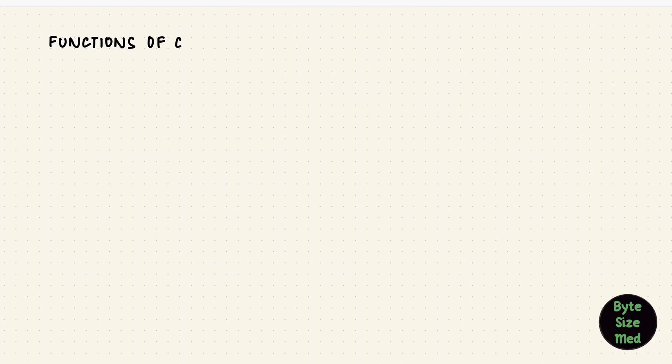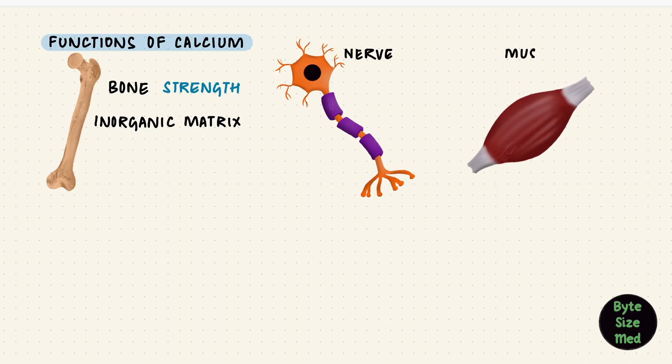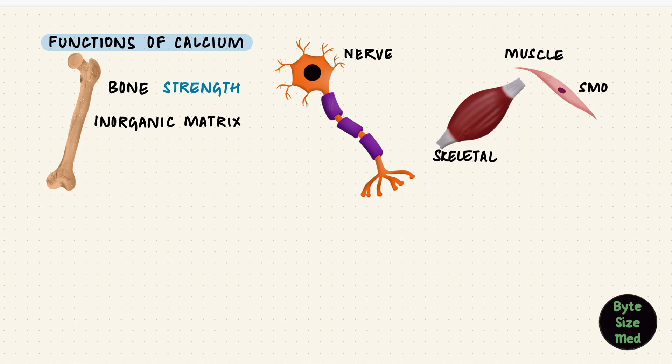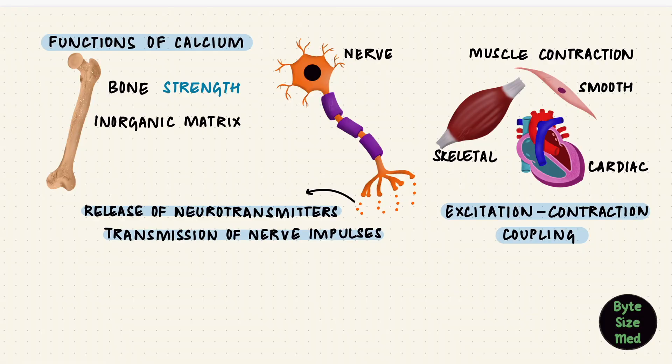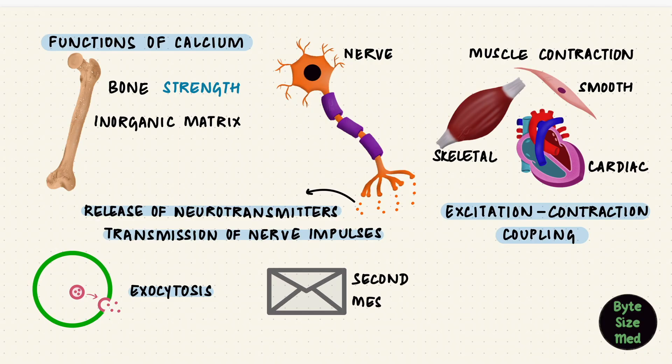What does calcium do in the body? Bone obviously needs it. Calcium forms a part of the inorganic matrix giving bones strength. Excitable tissue like nerve and muscle need calcium to function. Skeletal muscle, smooth muscle, cardiac muscle all contract through excitation-contraction coupling for which calcium is essential. In nerves, neurotransmitter release and transmission of nerve impulses needs calcium. In cells, the process of exocytosis also needs calcium. Calcium also works as a second messenger, so it's important for signal transduction. In blood, calcium is needed for coagulation. The clotting enzymes need calcium.